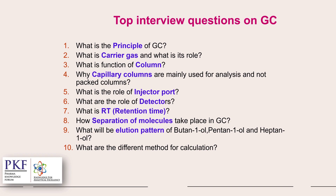What are the different methods for calculation? The different methods are: area normalization method, external standard method, and internal standard method. What are the limitations of GC? Compounds like carbamate, ester, and ether cannot be analyzed on GC.